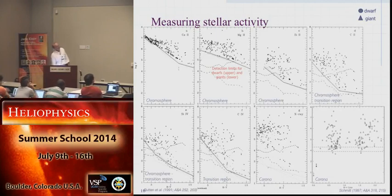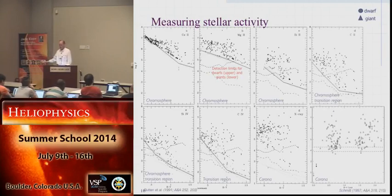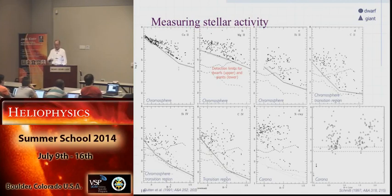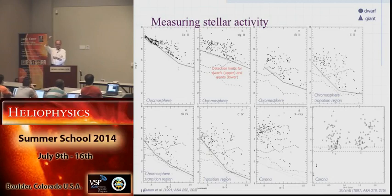These confusing diagrams are meant to show that we can measure activity in all these different diagnostics going from chromospheric to coronal, and we can plot them as a function of stellar properties. For main-sequence stars, we can show activity as a function of B-V color or effective temperature. At any color, you see a big range in activity values—that's the key point: the structure of the star alone is not enough to determine the magnitude of its activity. The second ingredient is rotation.